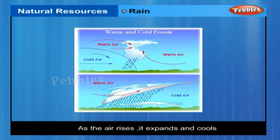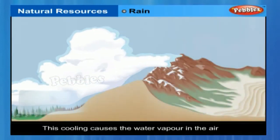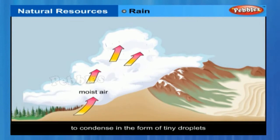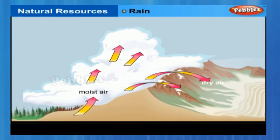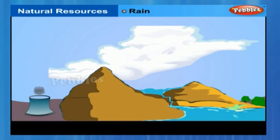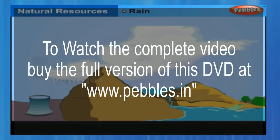As the air rises, it expands and cools. This cooling causes the water vapour in the air to condense in the form of tiny droplets. This condensation of water is facilitated if some particles could act as the nucleus for these drops to form around. Normally, dust and other suspended particles in the air perform this function.